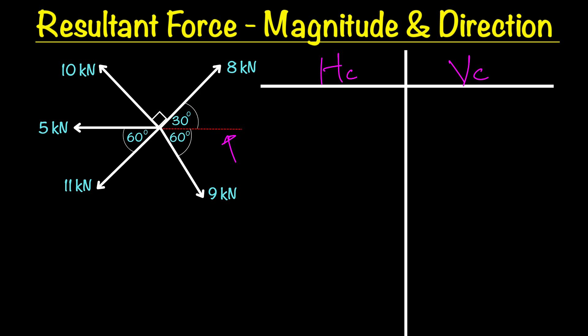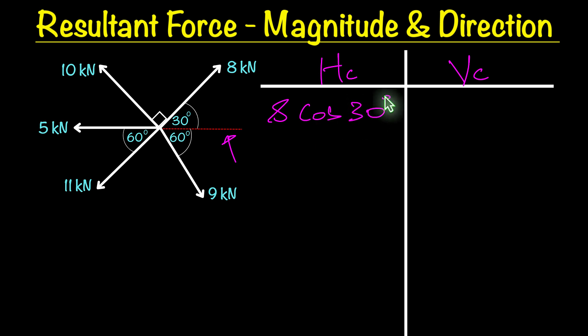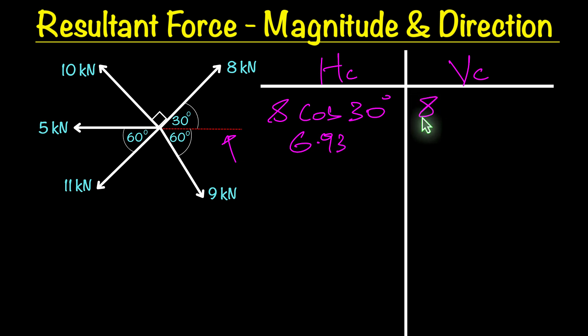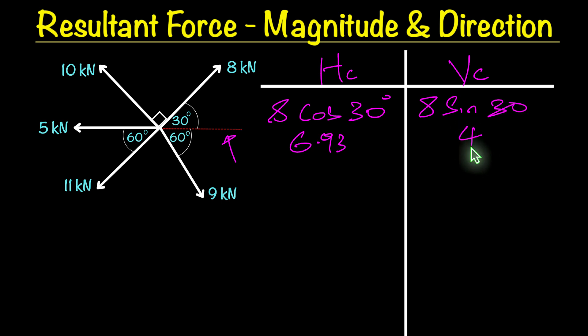Let's start with the 8 kilonewtons. Our horizontal component is going to be 8 cos 30 degrees, and when we work that out it gives us 6.93 kilonewtons. Then our vertical force component is 8 sin 30, and that turns out to be 4 kilonewtons.